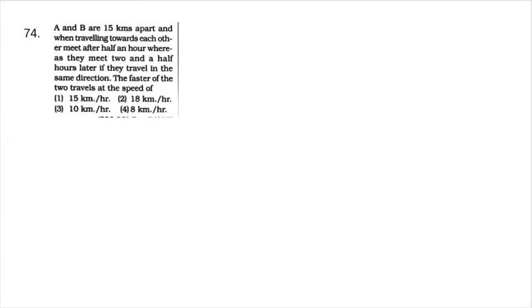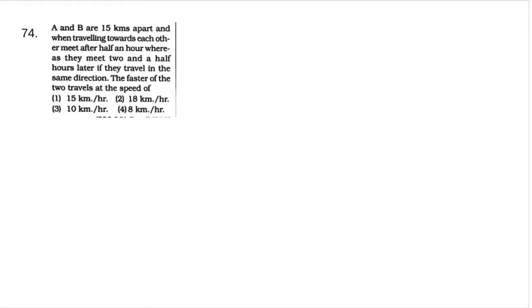Question number 74: In this question, it is saying that A and B are 15 km apart. When traveling towards each other, they meet after half an hour, whereas they meet two and a half hours later if they travel in the same direction. The faster of the two travels at the speed of...